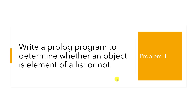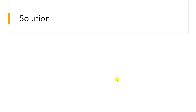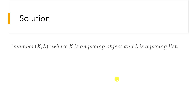Let us reason through the solution first, then write the program. We want to send a query to Prolog something like: `member(X, L)`, where X is a Prolog object and L is a Prolog list. Prolog should reply true or false depending on whether X is a member of L.